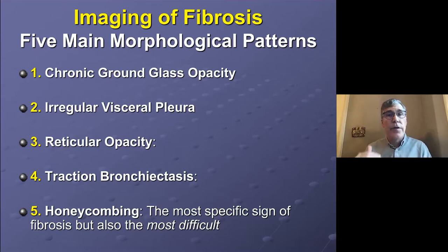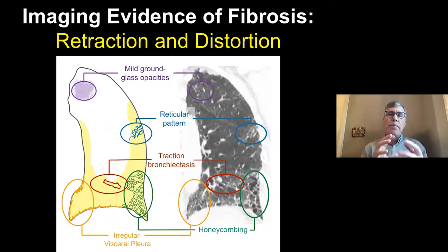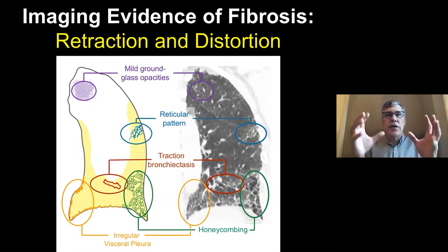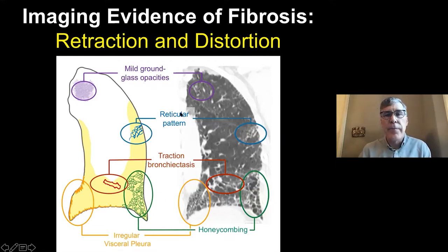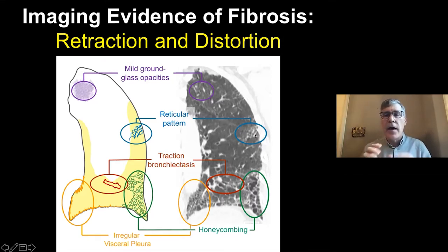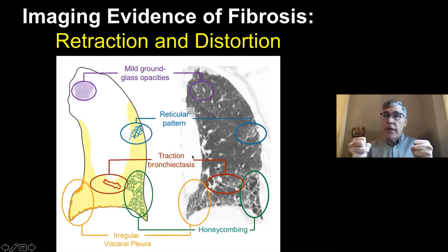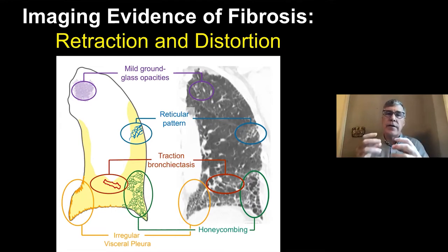Honeycombing is one of the most difficult and most important findings. The whole basis of fibrosis is that it causes retraction and volume loss, which distorts the parenchymal anatomy. It can manifest as chronic ground glass — but the ground glass should have other evidence of fibrosis within it. Reticulation means net-like crisscrossing lines. Traction bronchiectasis is the pulling apart of airways because of surrounding parenchymal volume loss and retraction, making them wider.